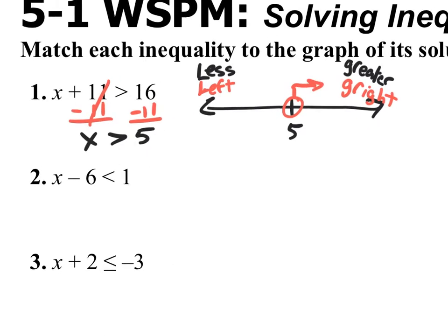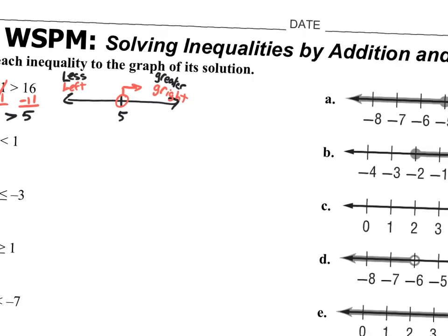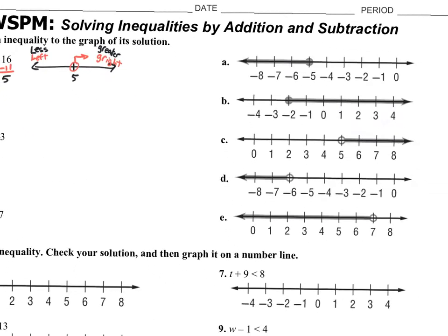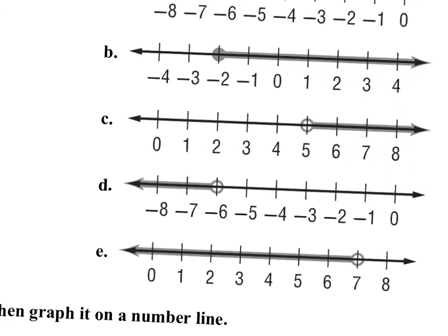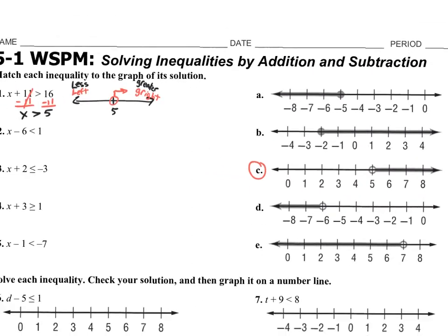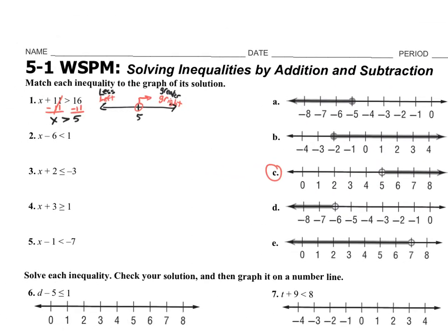So when we look over here, which one has an open dot at 5 going to the right? That would be C. So the answer for number 1 is C.